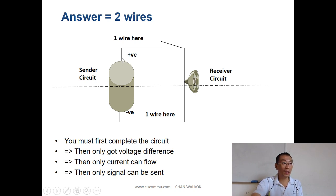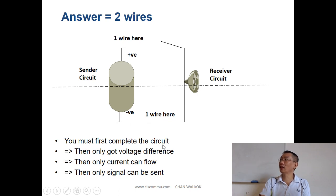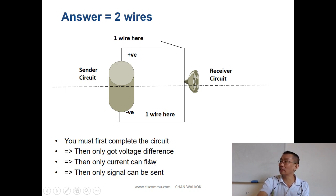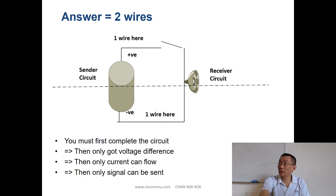Imagine this is a battery — positive and negative. There's one wire going all the way to the receiver circuit, and another wire returning. You need to complete the circuit first. Once the circuit is complete, you have a voltage difference, and when there's a voltage difference, you can send current, you can send a signal. Two wires are required to send a signal.